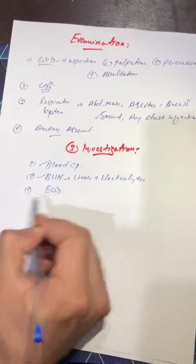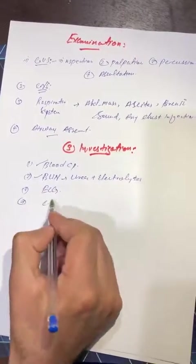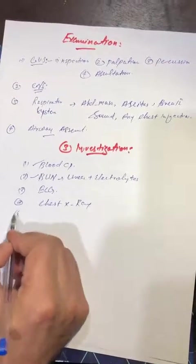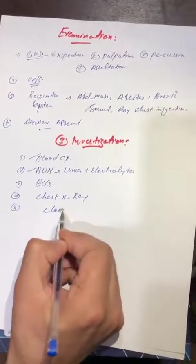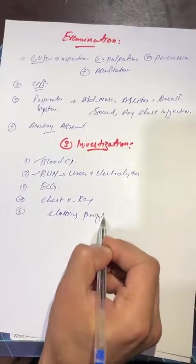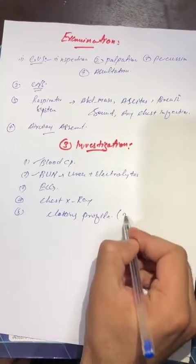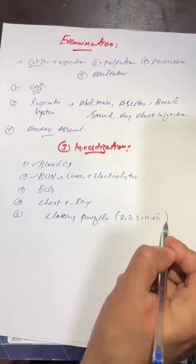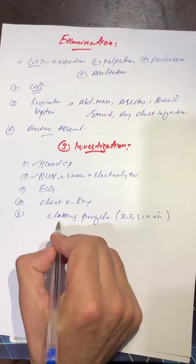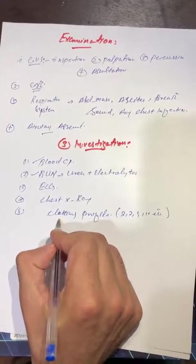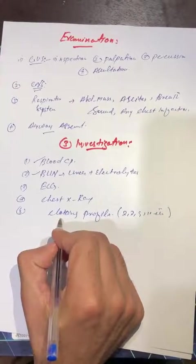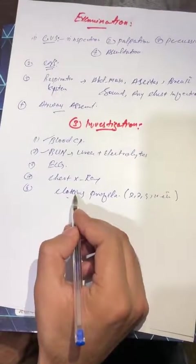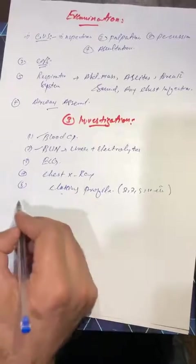Third, ECG—electrocardiogram, and then chest x-ray. Then we will check clotting profile. In clotting profile, we will check clotting factors 2, 7, 9, 10, etc., to check if any type of clotting property exists or not. If there is a clotting protein deficiency, then we will never go through surgery because there will be no clotting of blood.